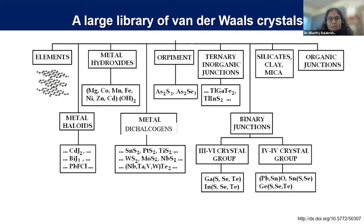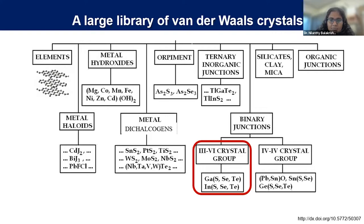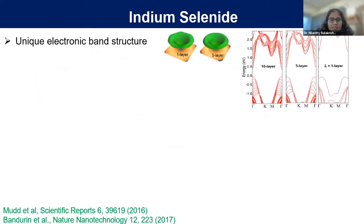As you know, 2D materials as a field of research now encompasses a huge variety of different materials — some are metals, some are semiconductors, and some are insulators. The materials I am interested in are the III-VI crystal group, especially indium selenide, gallium selenide, indium sulfide, and gallium sulfide. These materials are a little bit different from the well-known metal chalcogenides such as molybdenum disulfide and tungsten disulfide.